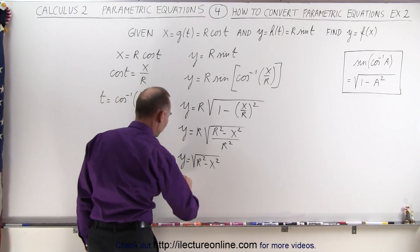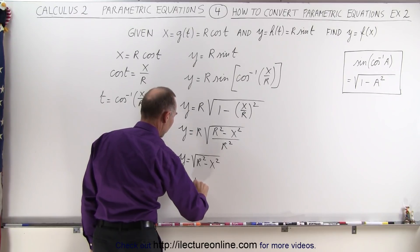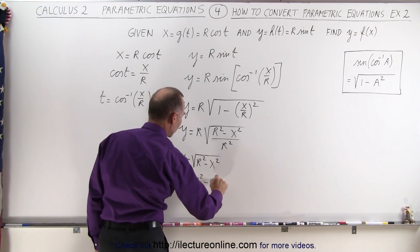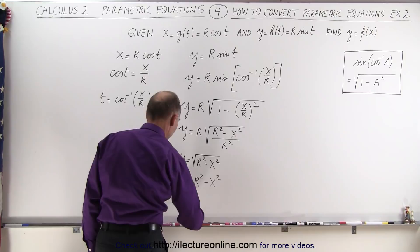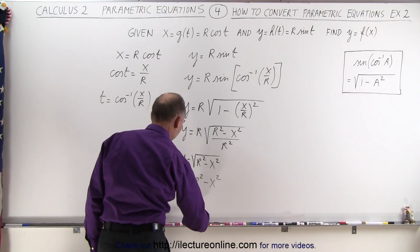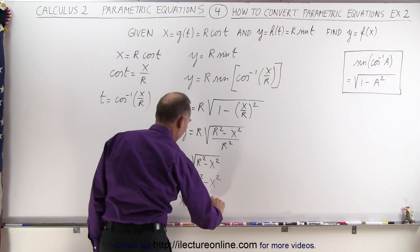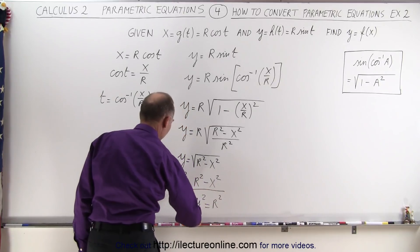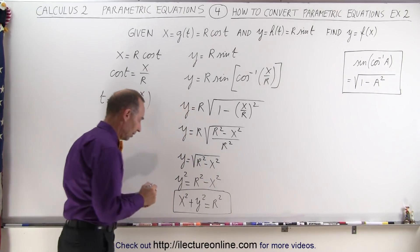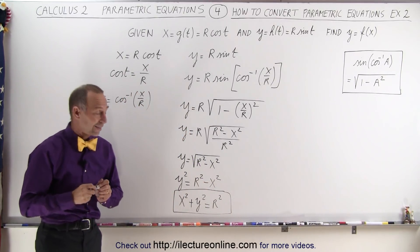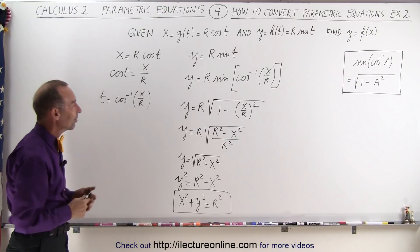Now we square both sides. So we get y squared is equal to r squared minus x squared. Move the minus x squared across. We get x squared plus y squared equals r squared, which is of course something we already knew, except we may not have known how to get to that point using this technique.